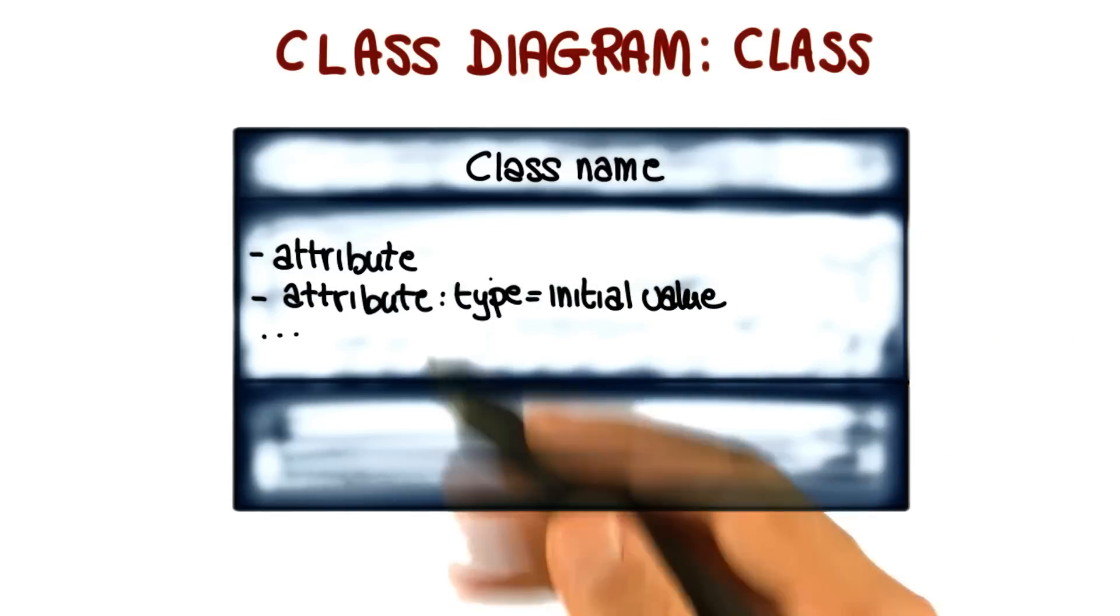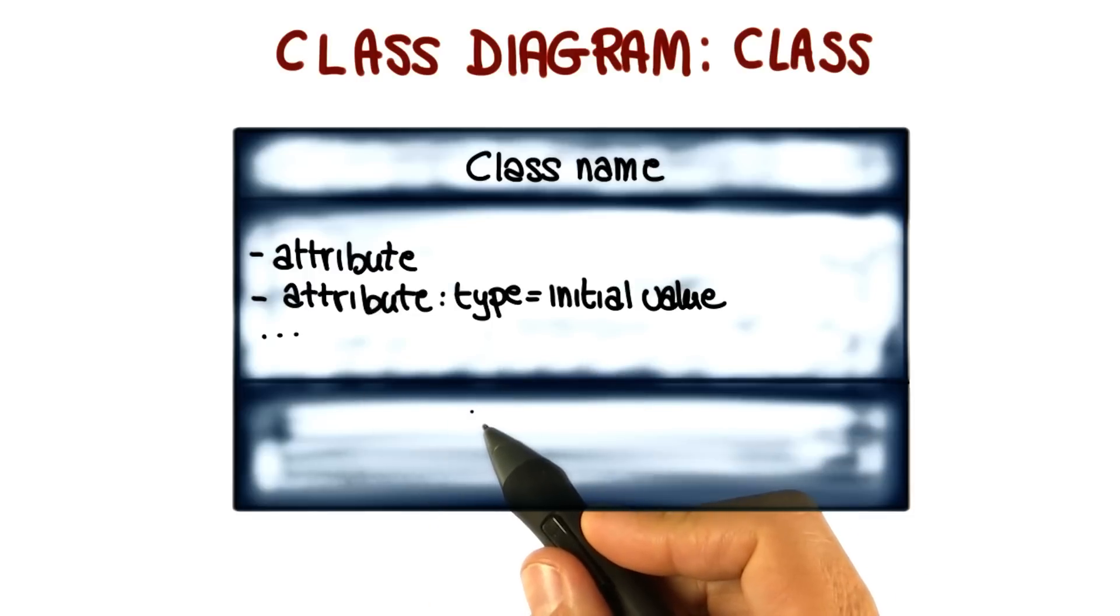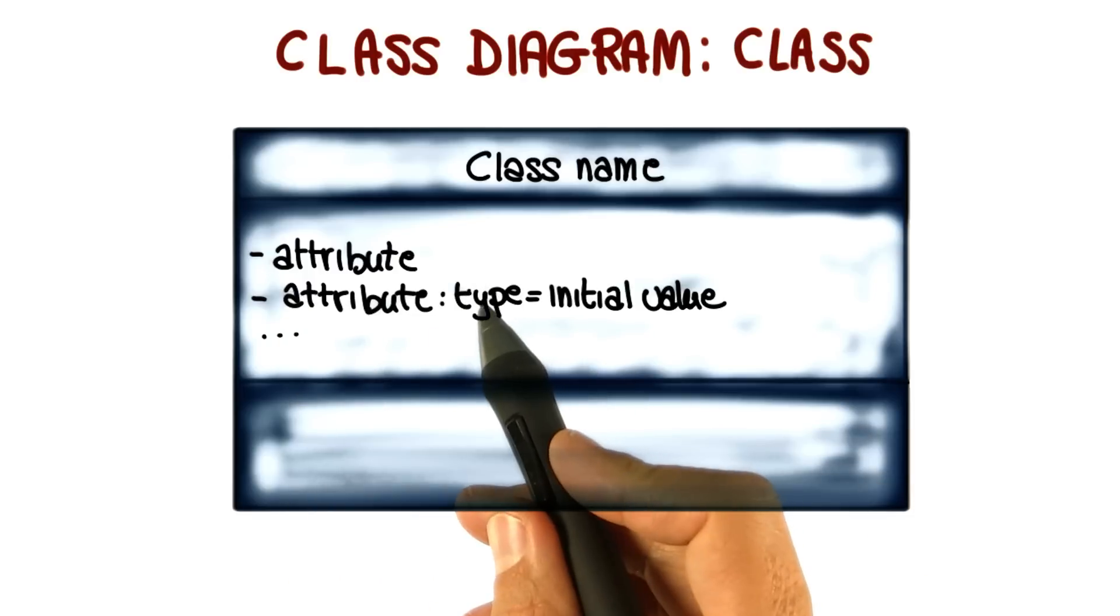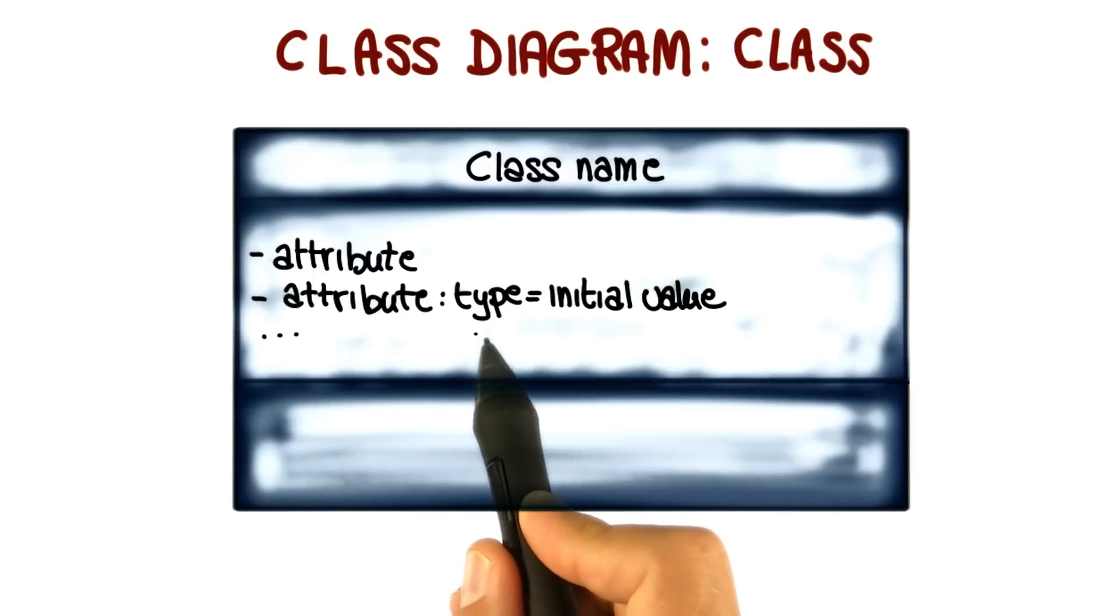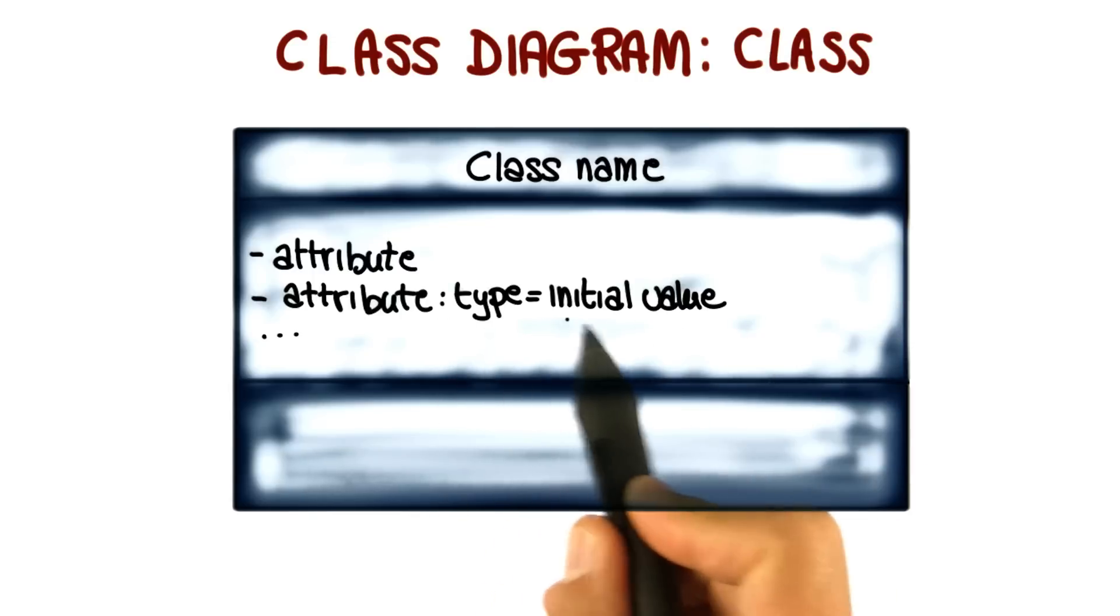The second part of a class are the attributes, where the set of attributes define the state for the class. We can list an attribute simply by name, or provide additional information. For example, we might define the type of the attribute and an initial value.